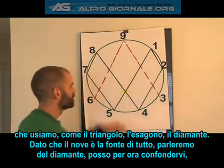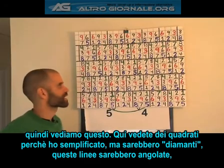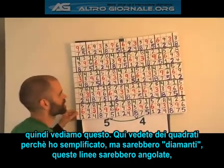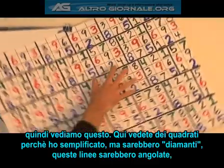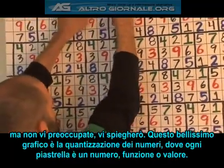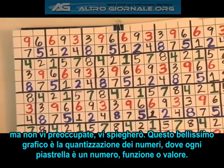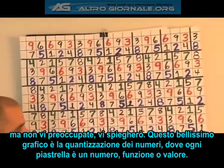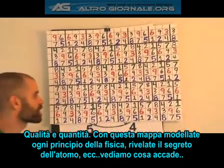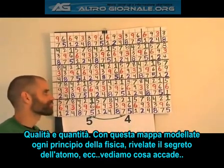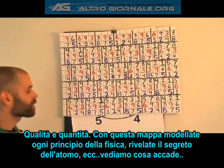Now you may be confused at what I'm talking about, so let me bring this up to help. This symbol — the first thing to note is that what you're seeing here are squares. I did it that way because it was graphed out and easier to do, but it really should be diamonds, with these lines truly coming at an angle. This beautiful chart is the quantizing of numbers — giving each diamond tile a number, a function and a value, a quality and a quantity. With this map, you can model all the principles of physics and reveal the true secret of the atom.